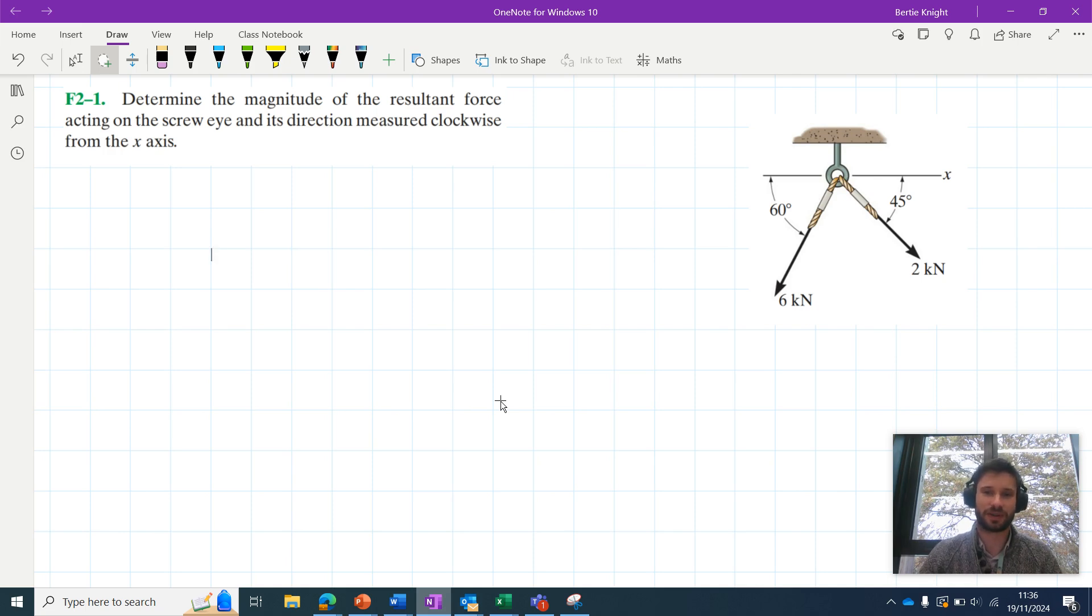Okay, so hello and welcome to this video tutorial for Engineering Mechanics: Statics by R.C. Hibbeler. We have this fundamental problem in Chapter 2 where it says determine the magnitude of the resultant force acting on the screw eye and its direction measured clockwise from the x-axis.